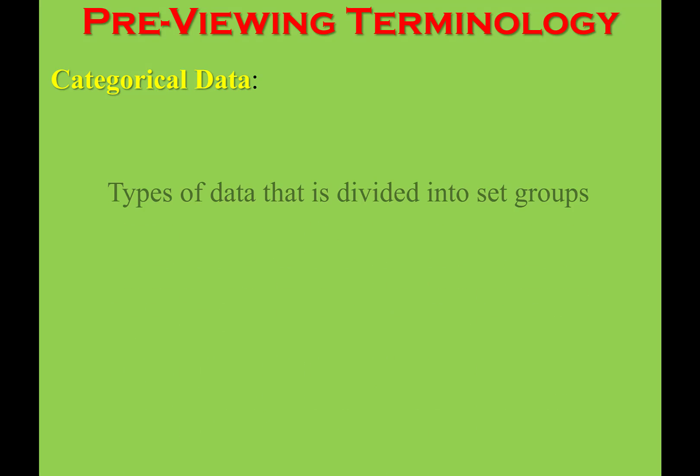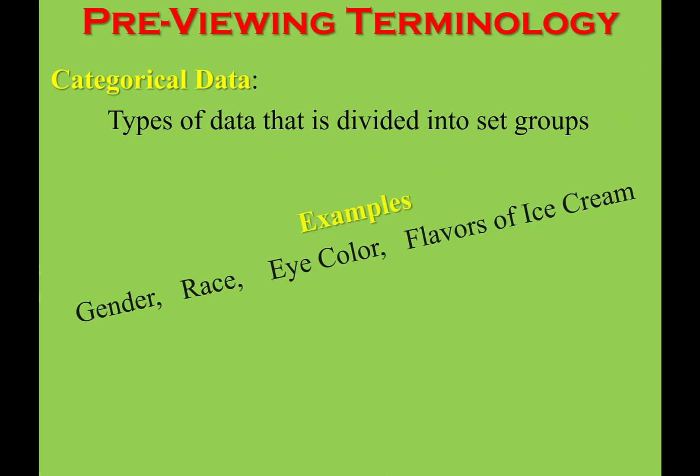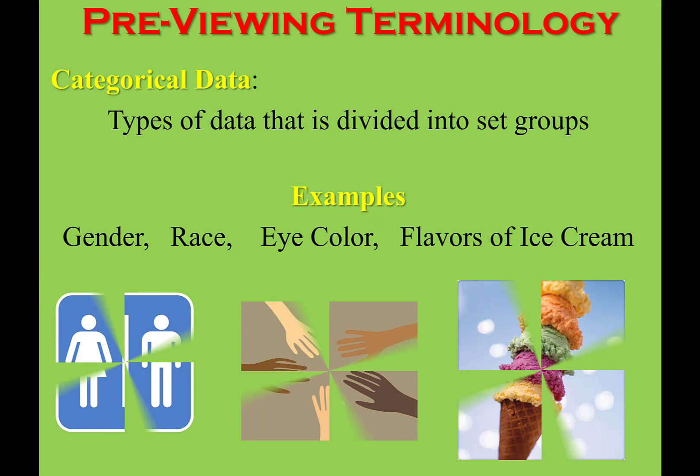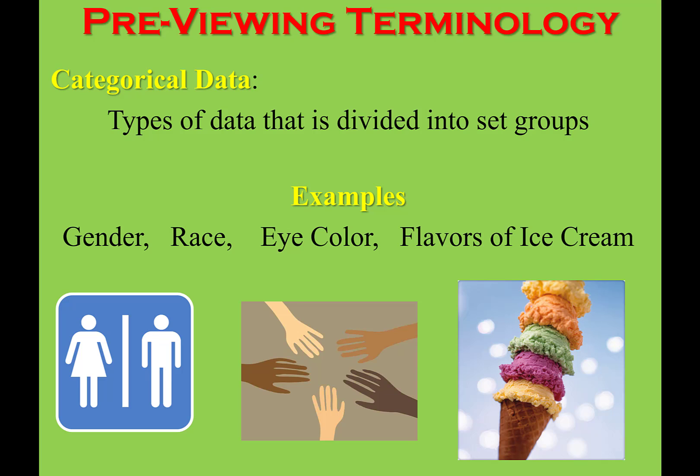Categorical data is data that can be broken up into groups. For example, gender, race, eye color, flavors of ice cream. There are different types within each group.